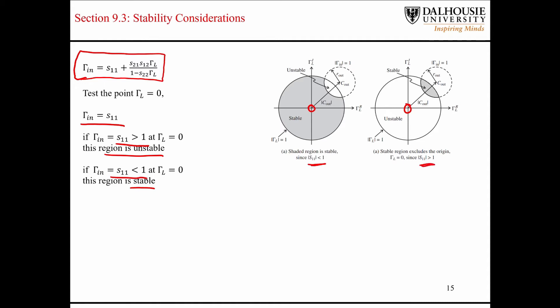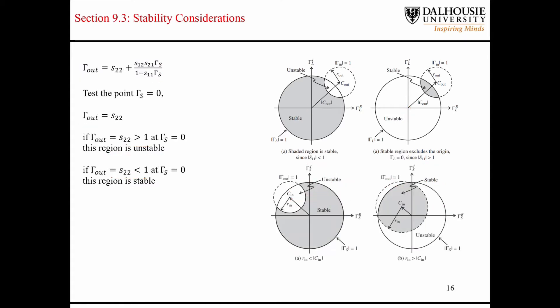If |S11| is less than one, then the point Γ_L equals zero is in the stable region. If the S11 parameter is greater than one, then the point Γ_L equals zero is in the unstable region. You can do the same thing on the output side — start from the expression for the output reflection coefficient and set Γ_S equal to zero.